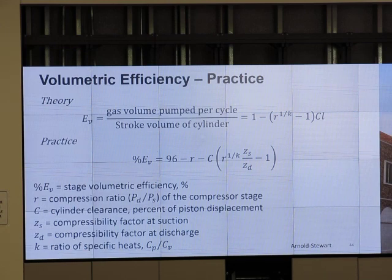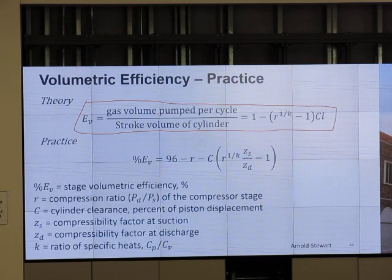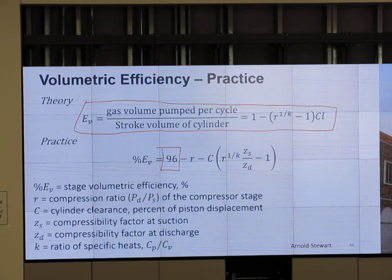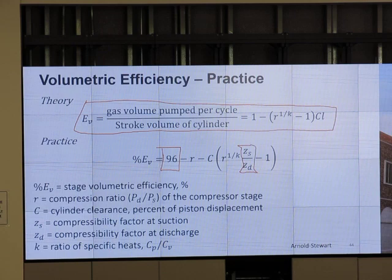Next, volumetric efficiency in practice. In theory we talked about it already. Gas volume pumped per cycle divided by stroke volume equals 1 minus compression ratio to the power of 1 over k minus 1 times clearance ratio. In practice we use percent and we didn't start from 100, we start from 96 to account for any imperfection in the compression - any lubricant, any gap, or any imperfection.